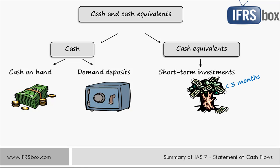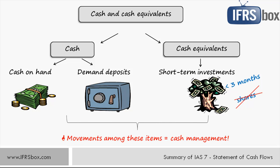Equity investments like shares are basically excluded from cash equivalents, with some exceptions — for example, preferred shares acquired within the short period of their maturity and specified redemption date. The Statement of Cash Flows excludes movements between items that constitute cash or cash equivalents, because these are part of cash management rather than part of its activities.